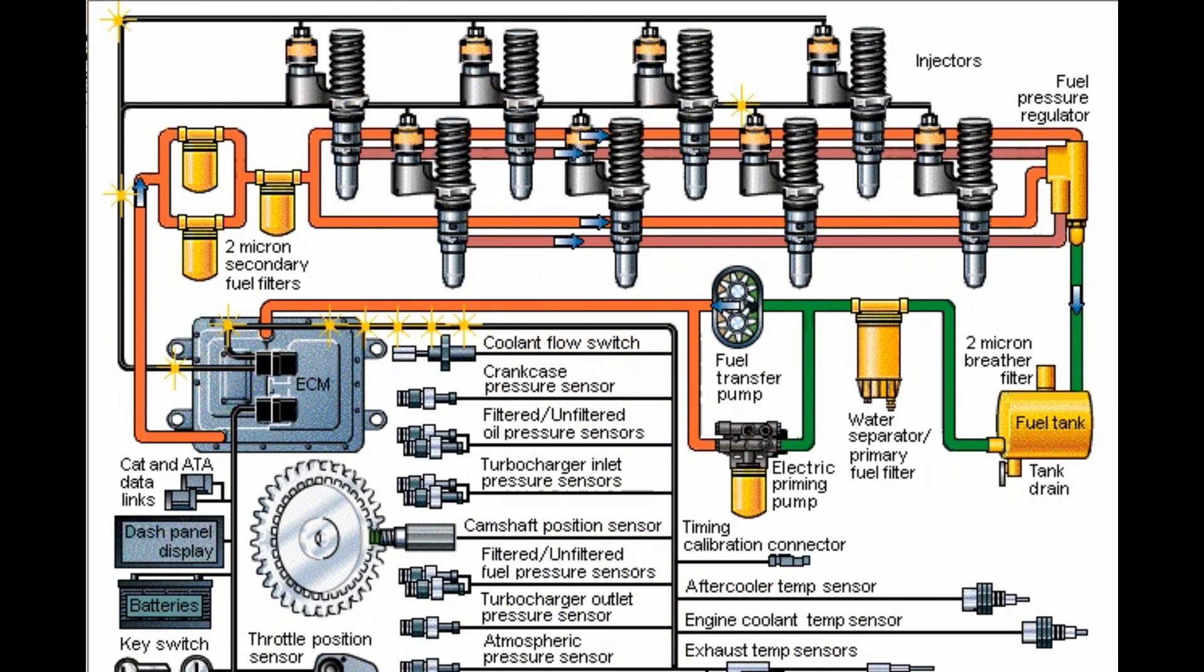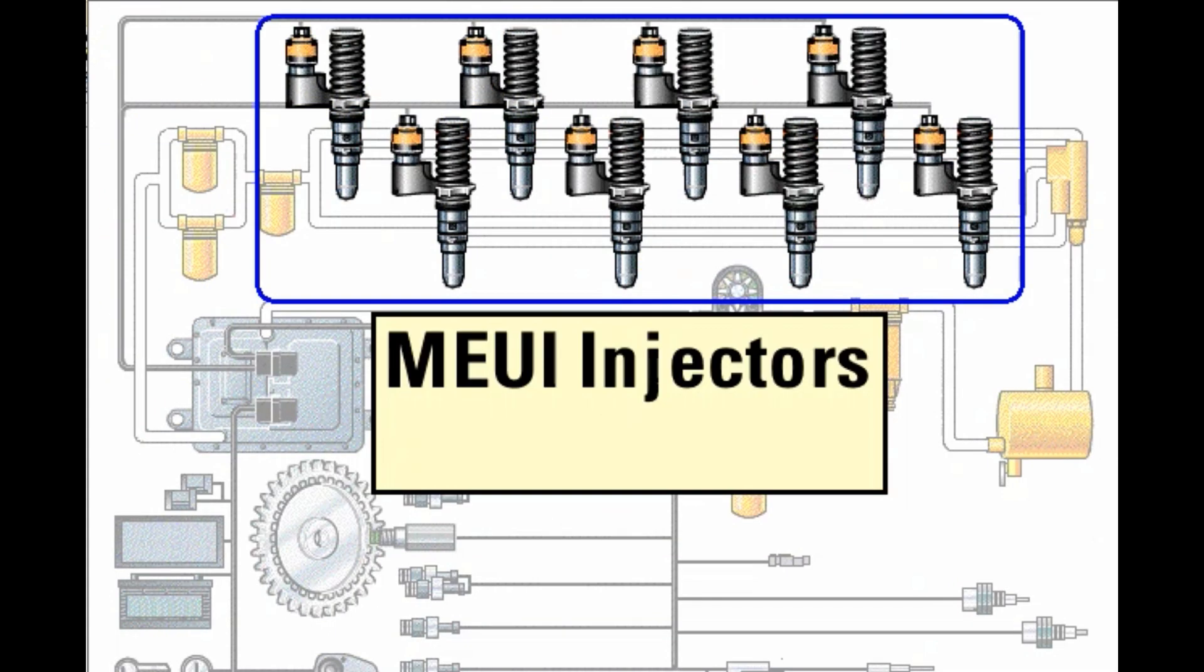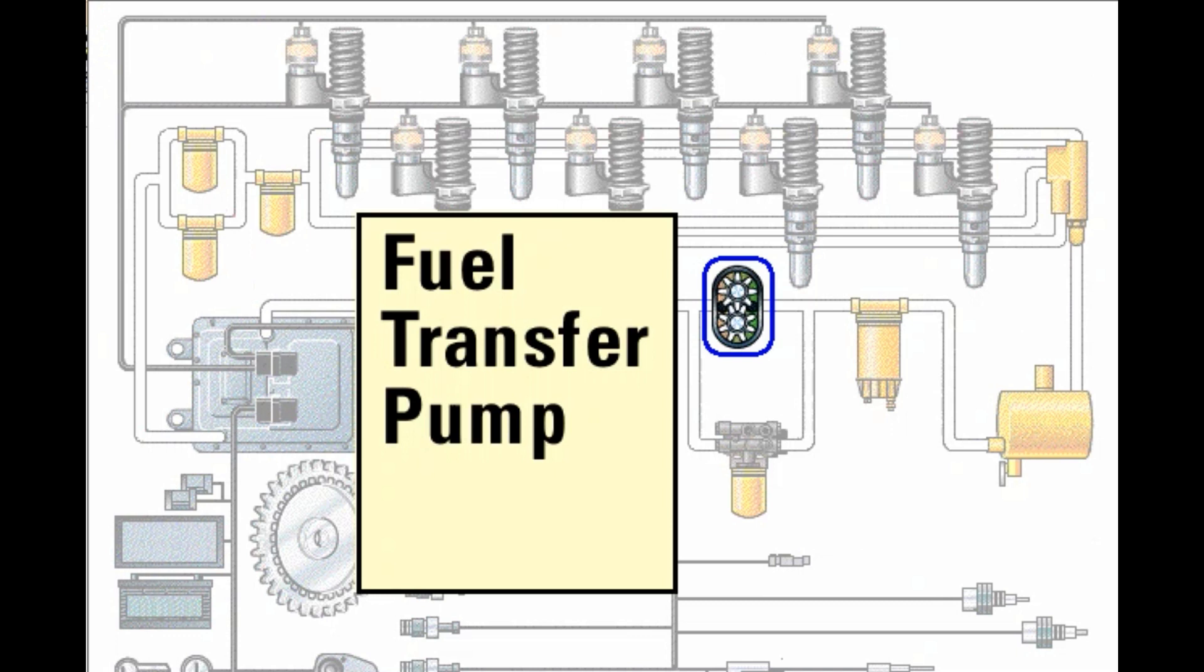The MEUI fuel system consists of five major components. Electronic unit injectors produce fuel injection pressures up to 152 megapascals or 22,000 psi and fire up to 15 times per second at rated speed. The fuel transfer pump supplies the injectors by drawing fuel from the tank and pressurizing it to about 400 kilopascals or 60 psi.